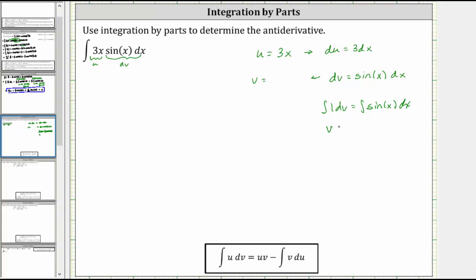The integral of 1 with respect to v is v. V equals the integral of sin(x) with respect to x is negative cos(x). We do have a plus c here, but we'll leave that to the very end. So we have v equals negative cos(x).